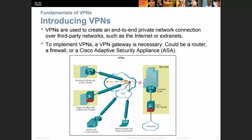To implement a VPN, a VPN gateway is necessary, and this VPN gateway could be a router, a firewall, or a Cisco Adaptive Security Appliance (ASA). Here you have the types of VPN: a business partner with a Cisco router, or a regional office with a Cisco ASA firewall. If you are at home or a small office/home office, you can use a Cisco router to access the VPN. A mobile worker can use Cisco AnyConnect — you can use the Cisco AnyConnect software application for VPN.